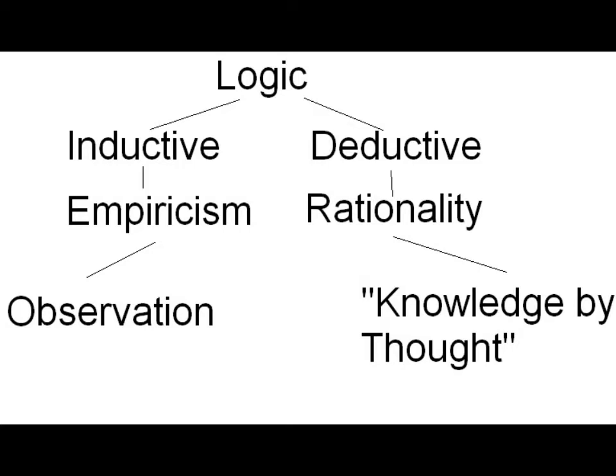Under the branches of logic, we have inductive and deductive reasoning. Reasoning is what we use in logic to come to a series of conclusions. Inductive reasoning, which is what empiricism uses, is based off of observation. We can't know anything empirically under inductive reasoning if we haven't observed it, and that's largely what the scientific method does with experiments — it uses inductive reasoning to induce something.